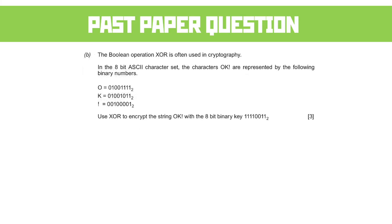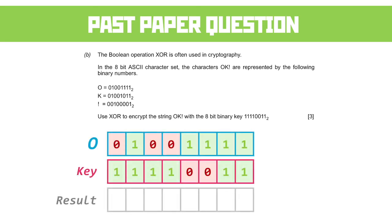The boolean XOR is often used in cryptography. XOR is an exclusive OR — both bits used as inputs need to be differently set in order to get a 1 as the result. We've got some ASCII representations of 'OK!' and a key. What we need to do is use XOR to encrypt the string. We start by placing our value and our key on top of each other and then go down column by column applying XOR.